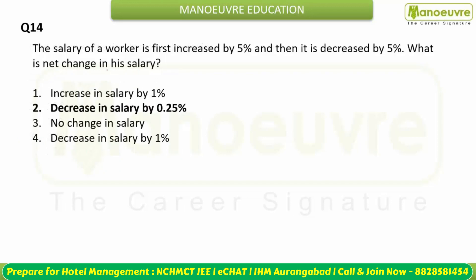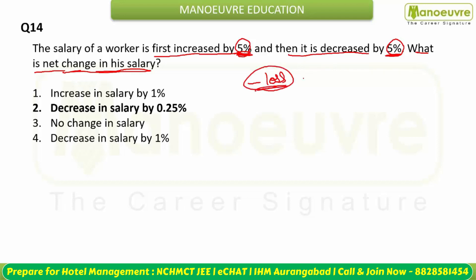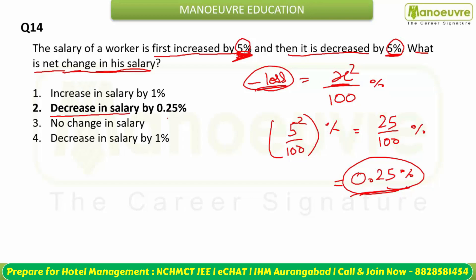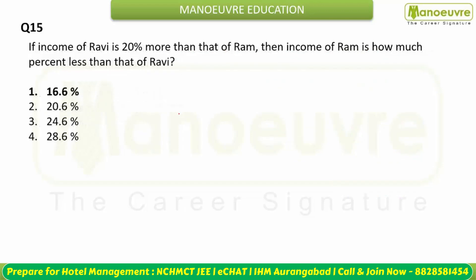A worker's salary is first increased by 5% and then decreased by 5%. In such cases there is always a net decrease. The formula is x²/100 %, where x is the percentage value. Here: 5²/100 = 25/100 = 0.25% decrease. The net salary decreases by 0.25%.